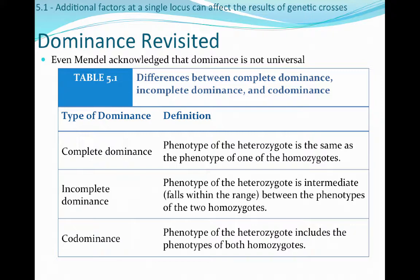Let's make sure we have a good understanding and just review dominance. There are three major types of dominance, all discovered after Mendel made his initial discoveries about inheritance. Mendel even acknowledged that dominance was not going to be universal. The first type is complete dominance, where the phenotype of the heterozygote is the same as the phenotype of one of the homozygotes — this is where dominant and recessive patterns of inheritance come into play.